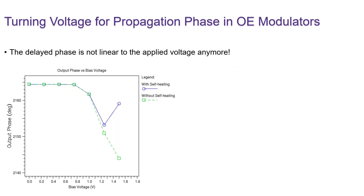In this project, two scenarios were set up. The first one simulates the phase delay applying a 1.5 volt voltage with the self-heating effect turned on. The other one is the same project with the self-heating effect turned off. It is obvious that the output phase shifted dramatically in the opposite direction because of the change in refractive index due to heat.